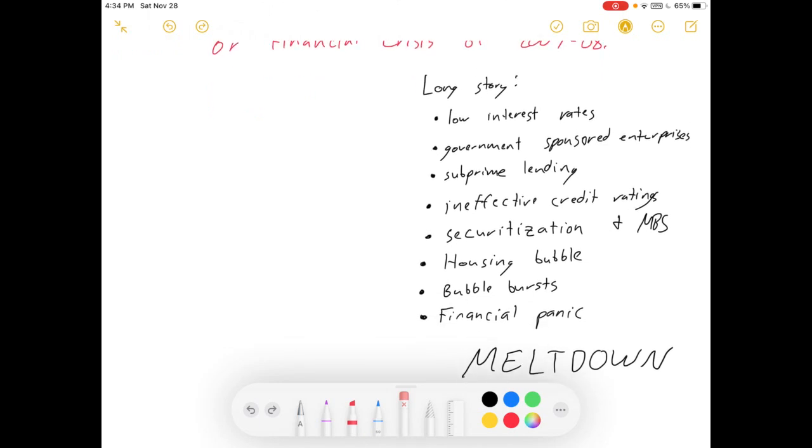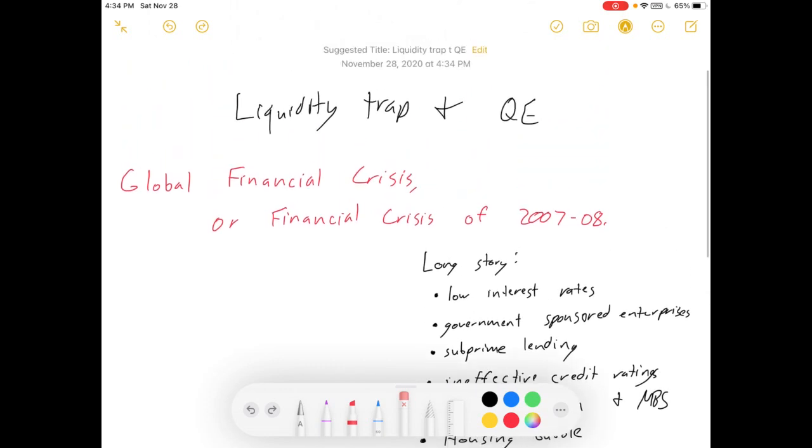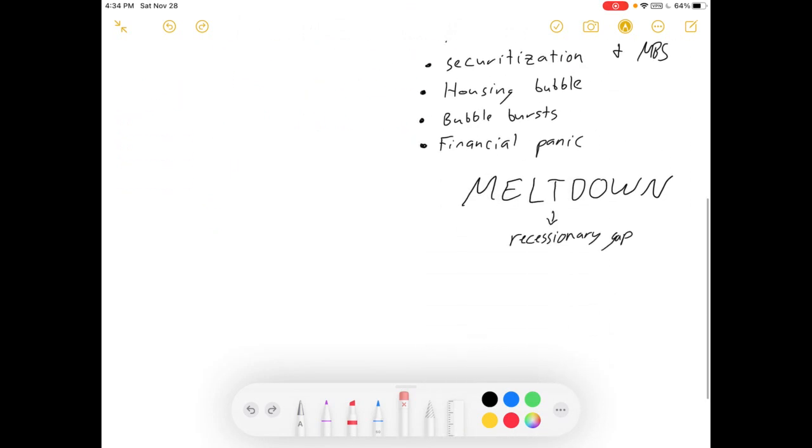There's a lot to the story, a lot of moving pieces, a lot of blame to go around. I'm not going to make any commentary on that. I just want to talk about what the liquidity trap was, why it mattered, and why we chose to do quantitative easing.